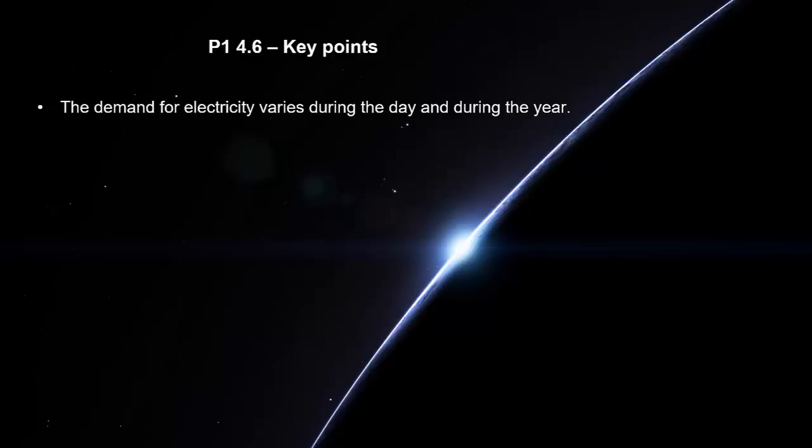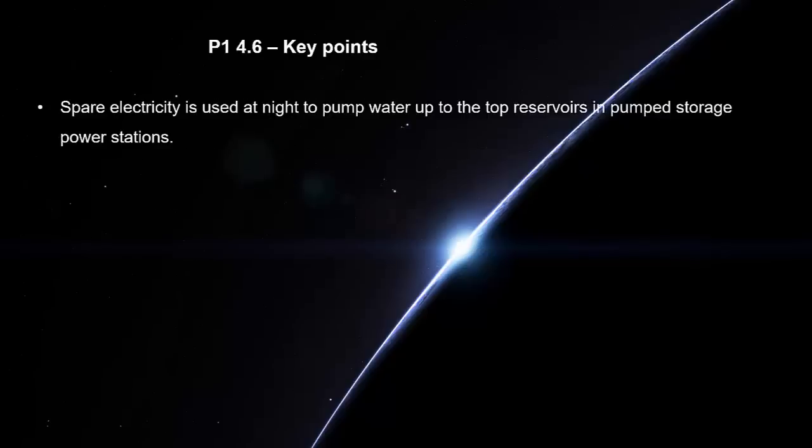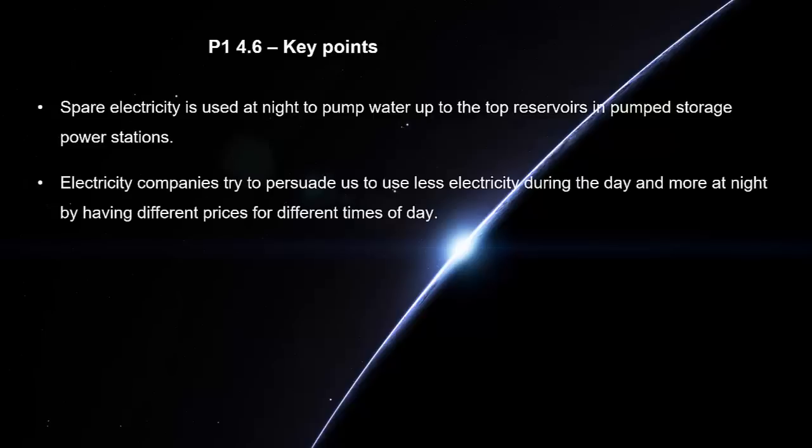The demand for electricity varies during the day and during the year. Demand is highest during the day and in the early evening. Hydroelectric power stations can provide electricity within a minute. It takes some time to start power stations from cold, so they are often left running. Spare electricity is used at night to pump water up to the top reservoirs in pumped storage power stations. Electricity companies try to persuade us to use less electricity during the day and more at night by having different prices for different times of day.